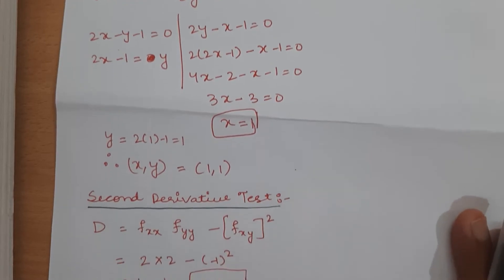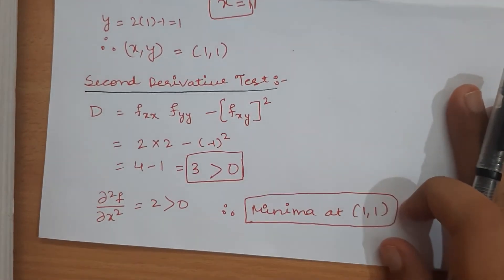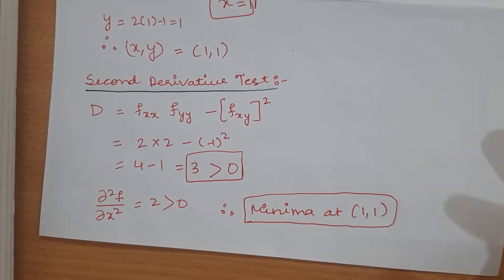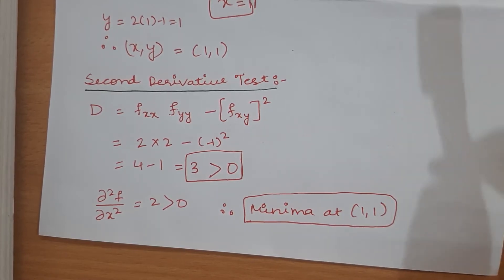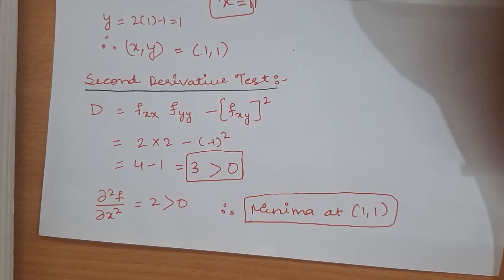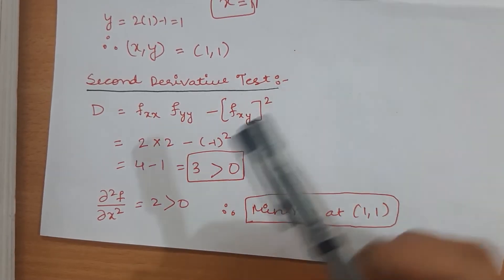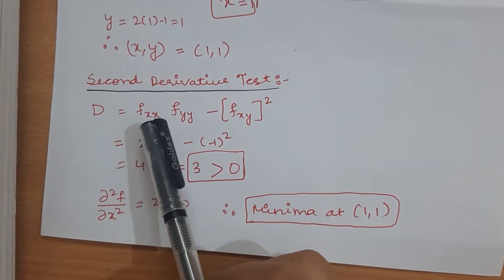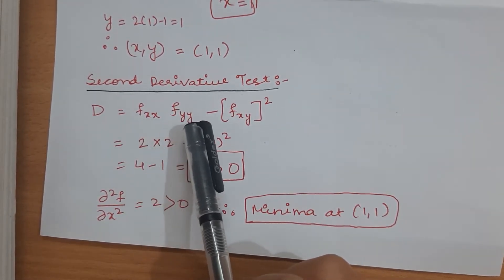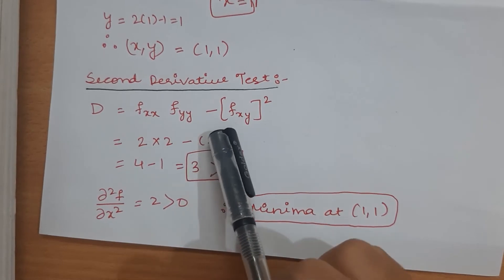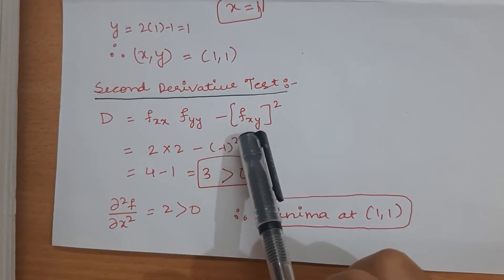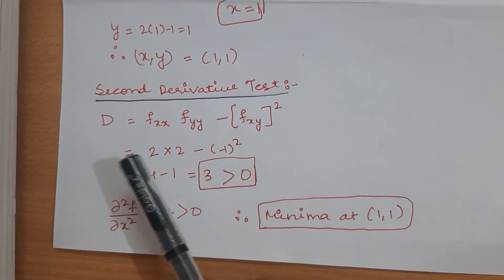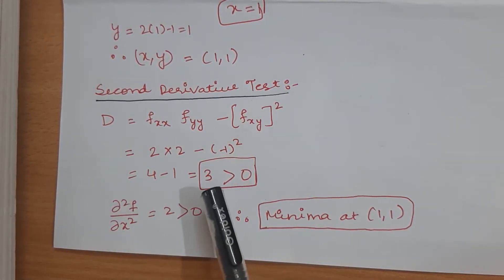Now we need to determine whether (1, 1) is a maximum or minimum using the second derivative test. We already found the second-order derivatives. Substituting into the formula D = (∂²f/∂x²)(∂²f/∂y²) − (∂²f/∂x∂y)², we get D = 3, which is greater than 0.